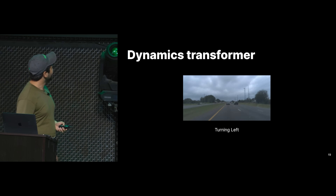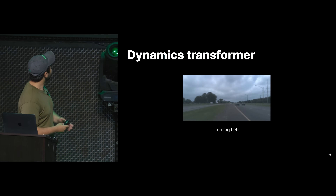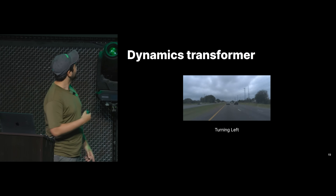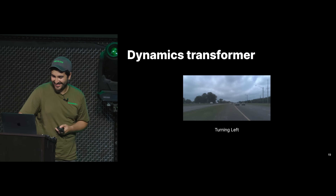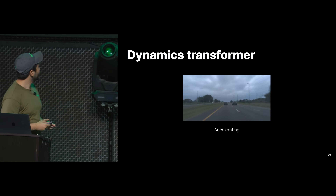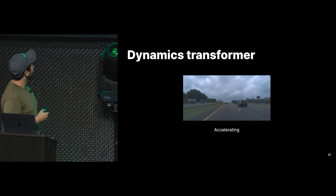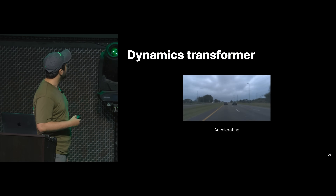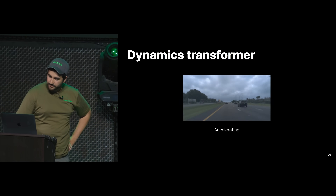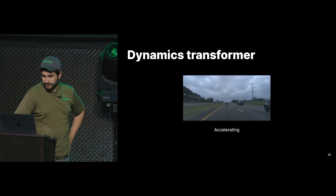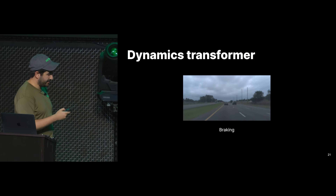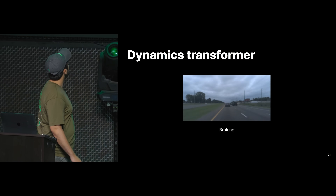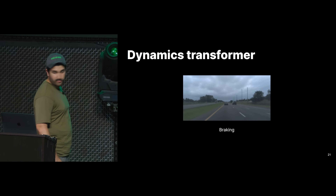You can also tell it to turn left, cross the median, drive into the opposite lane, even get close to oncoming traffic. You can also tell it to accelerate — notice the lane lines, it passes some traffic, so there's acceleration happening in this rollout. And you can tell it to brake — again notice the lane lines, they will slow down. As you can see, it successfully brakes.